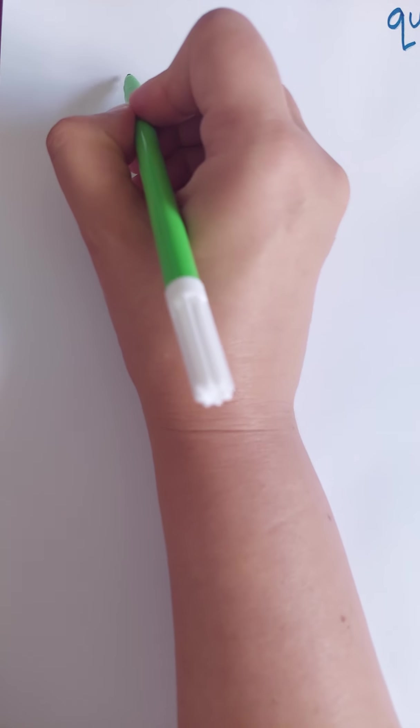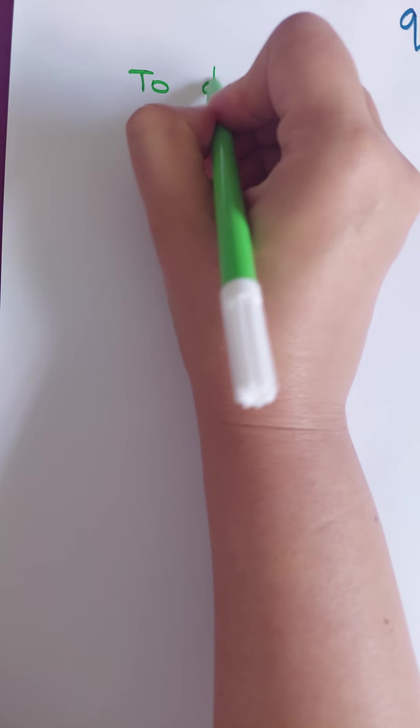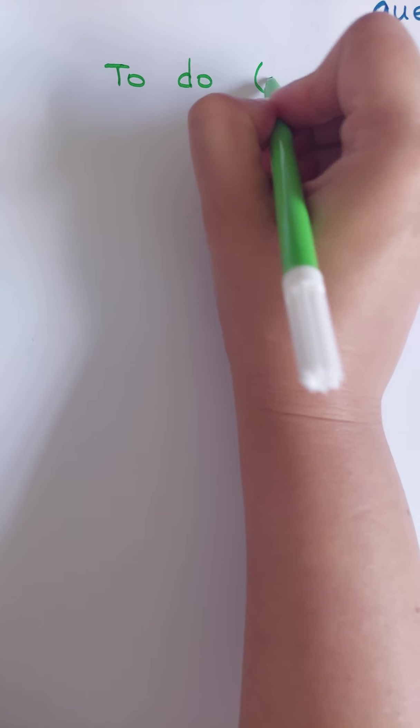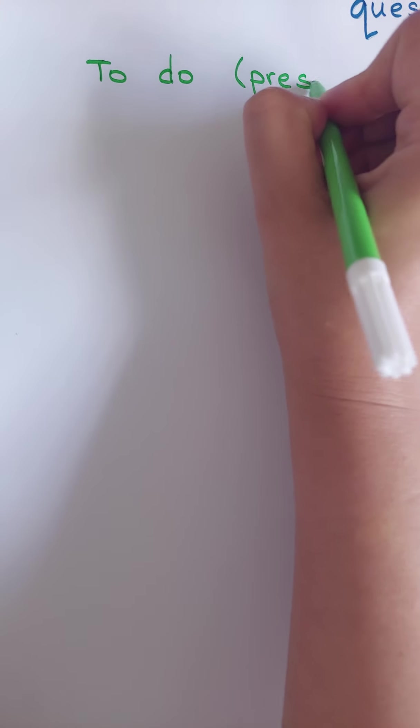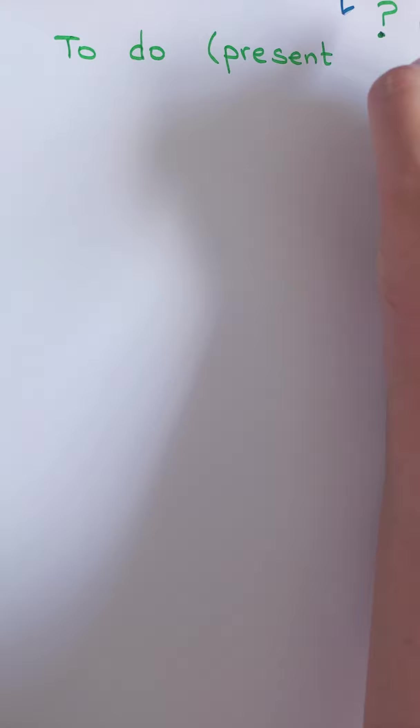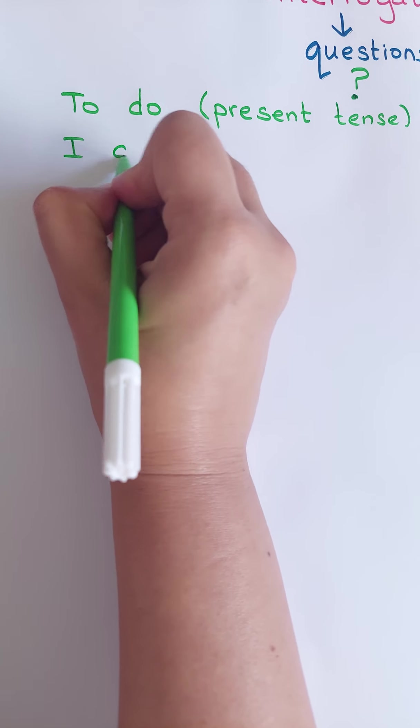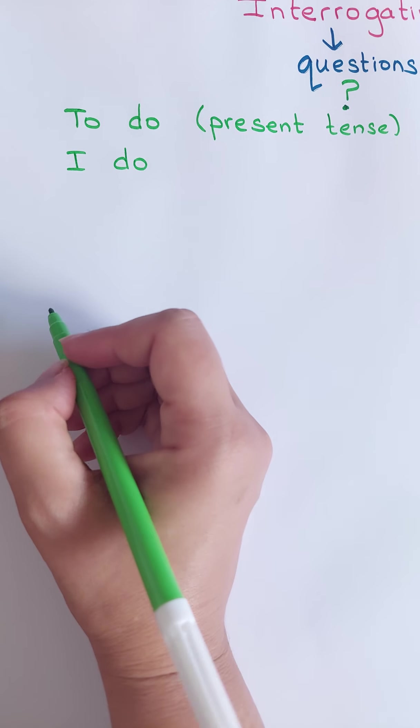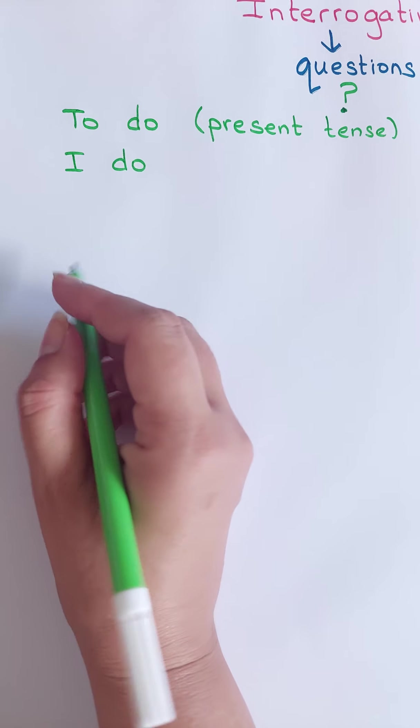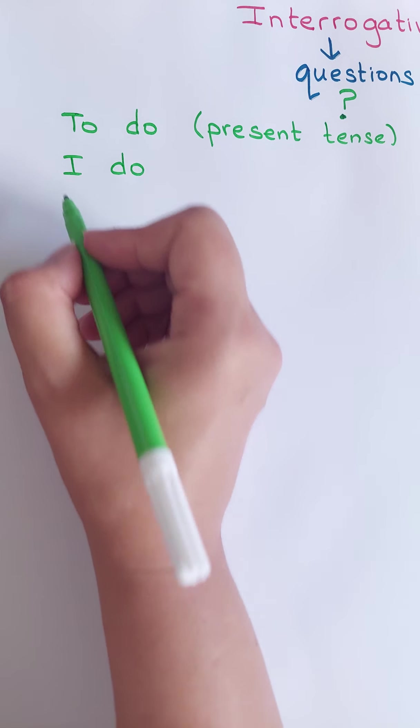Avant de commencer l'interrogative form, je vais voir un coup une petite révision du verbe to do au present tense. Parce qu'aujourd'hui, l'interrogative form qu'on va faire sera seulement au present tense. Alors, le verbe to do au present tense, on dit I do. Verb to do, ça veut dire le verbe faire. Le verbe faire, je fais, on dit I do.